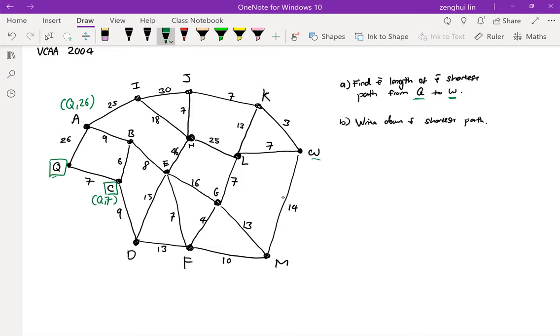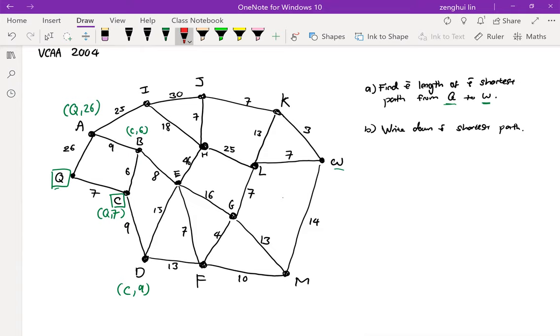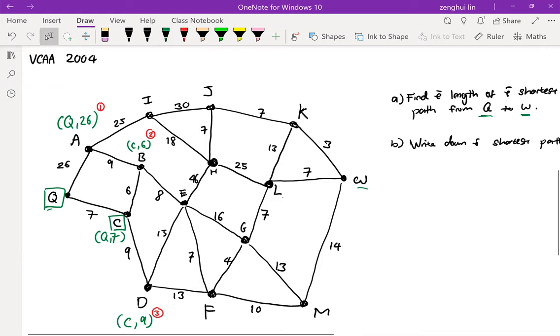And from C, I can either go C to B or C to D. My working will be from C to D takes 9 steps. From C to B takes 6 steps. And I have to choose the shortest paths from option 1, 2 or 3. So 26, 6 or 9, 6 is clearly the shortest. So I'm going to box this up.